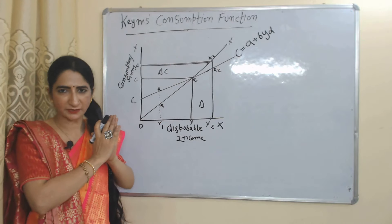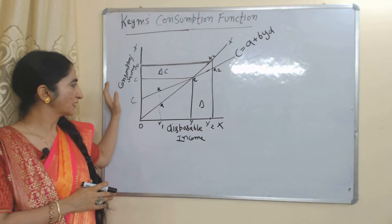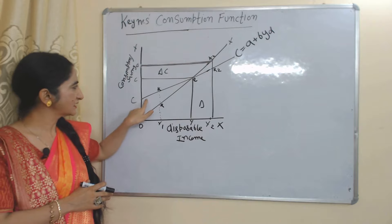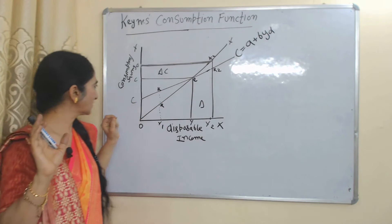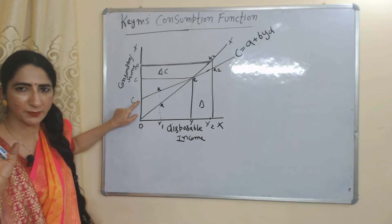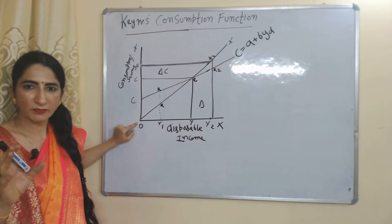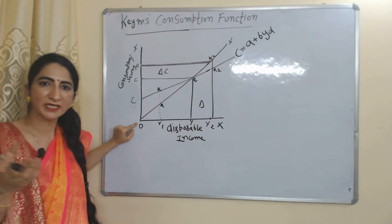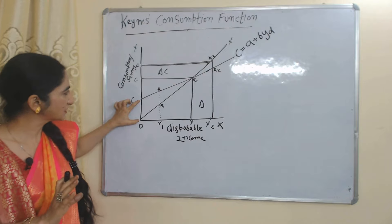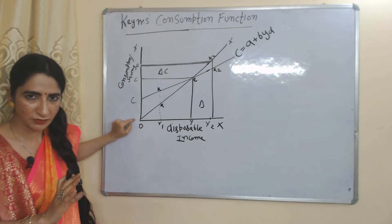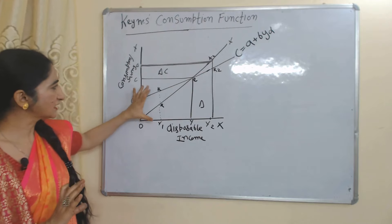Now we will see the diagram of Keynes' consumption function. On the x-axis we have disposable income and on the y-axis we have consumption and saving. The OY line is our income line and the CC line shows our consumption function C = a + bYd. Our consumption function starts from point C, not from zero, because consumption includes autonomous consumption — those expenditures we must make even when income is zero, shown as OC on the diagram.